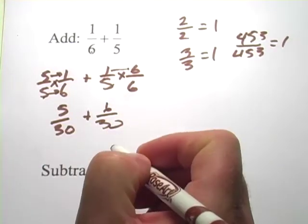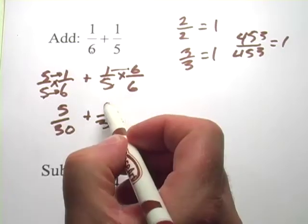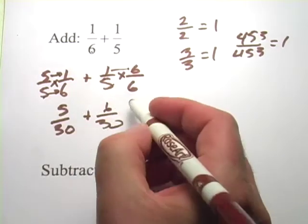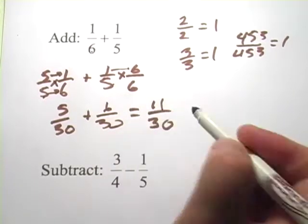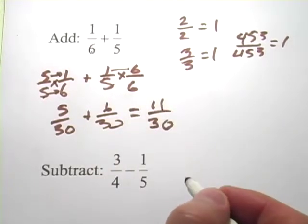Aha! So now the denominators are both 30. I can simply add what's on the top. 5 plus 6 is 11, and put that all over the common denominator, and the answer is 11 thirtieths.